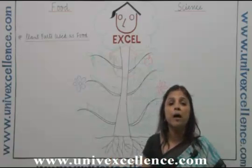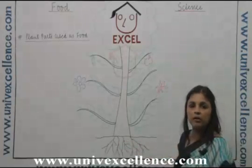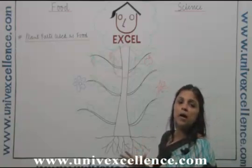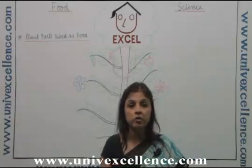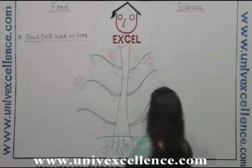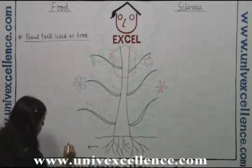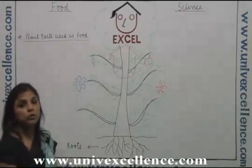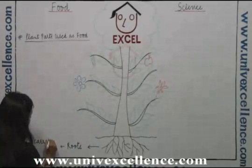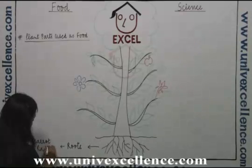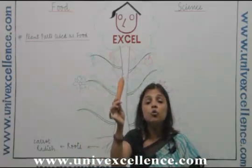Looking at this plant, starting from the ground level, these are roots. In some plants, the food gets stored in the roots. Such roots which we eat as food are, for example, carrot and radish.